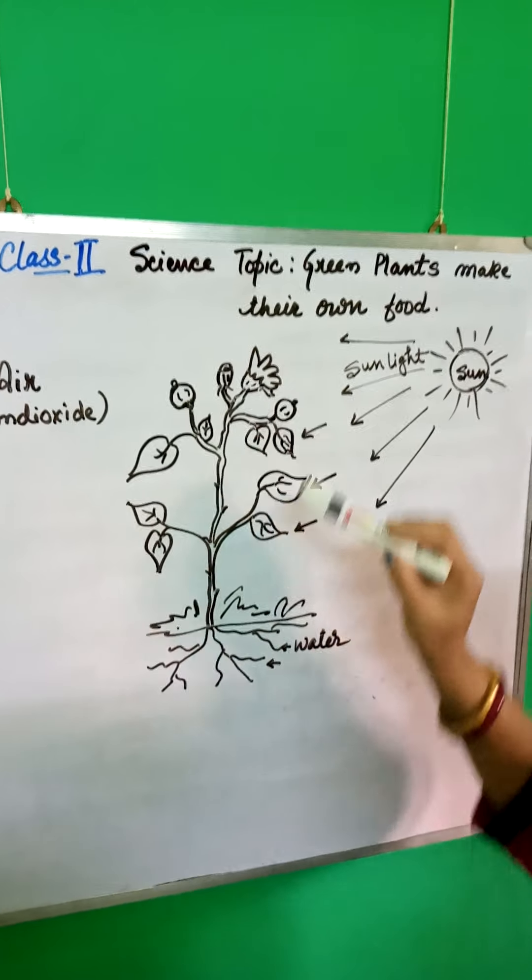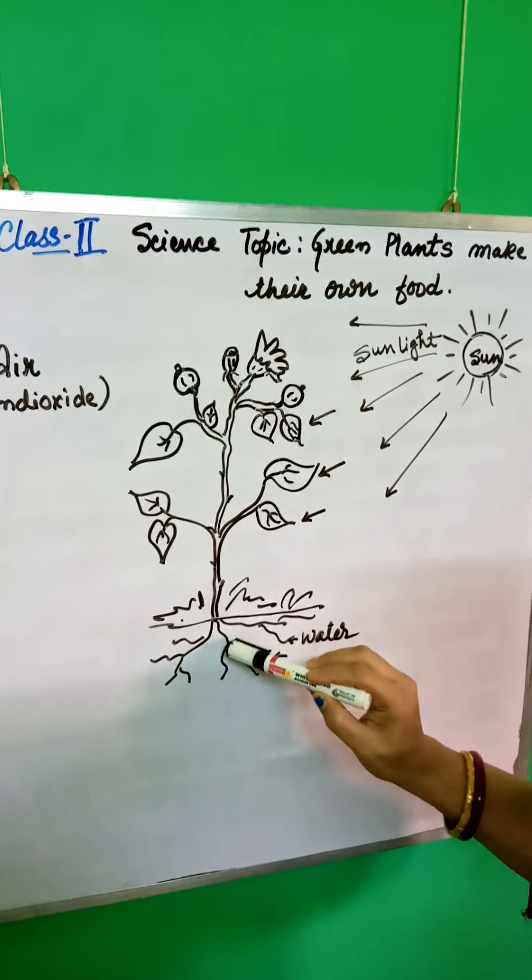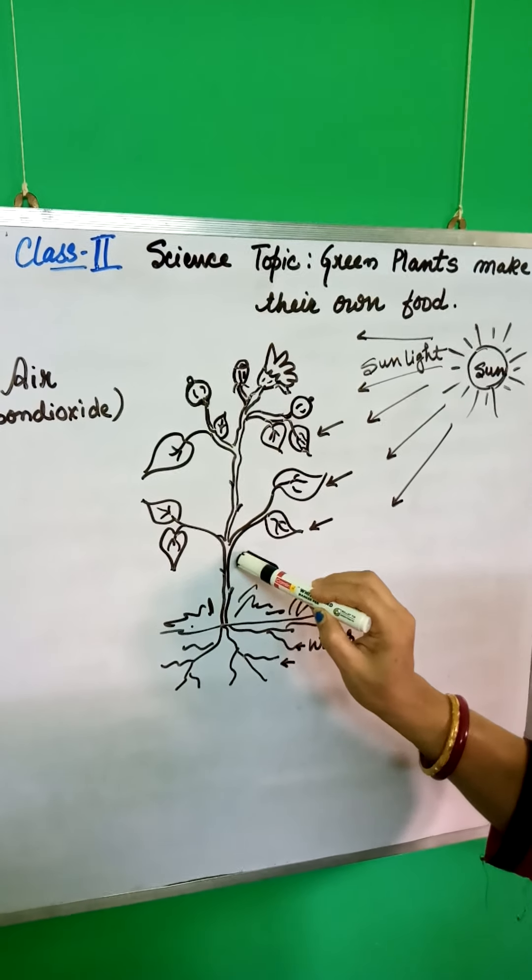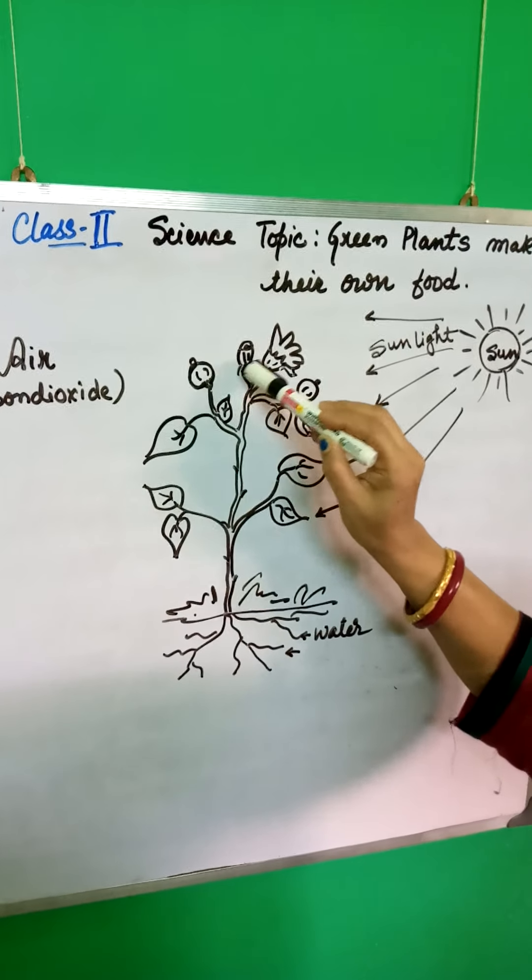Plants store extra food, store extra food in their roots, stems, fruits, leaves and in the seeds.